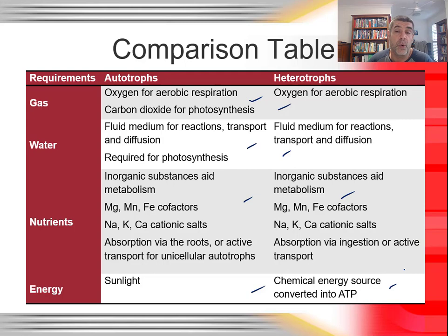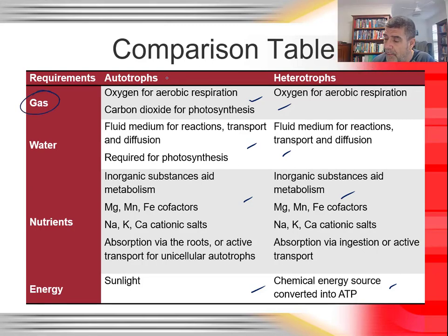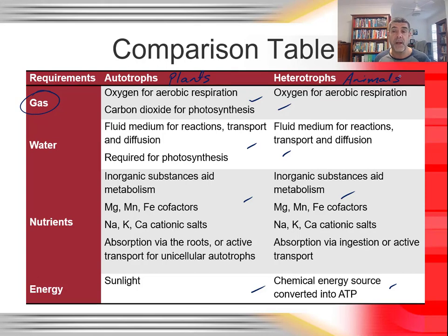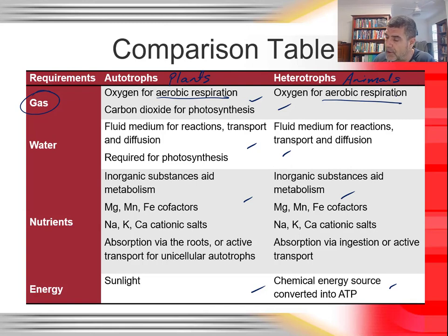We have to compare autotrophs and heterotrophs in terms of their nutrient and gas requirements. Starting with gases: we'll use plants as our autotrophs and animals as our heterotrophs to keep things simple. Both plants and animals require oxygen for aerobic respiration. There are several forms of anaerobic respiration, but the most efficient form is aerobic respiration, which requires oxygen — meaning both heterotrophs and autotrophs require oxygen.